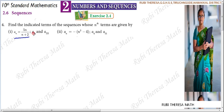We need to find the indicated terms — a6 and a13, that is the sixth term and the thirteenth term — where the general term of that particular sequence is defined as 5n divided by (n plus 2). We find the general term and substitute the given value.